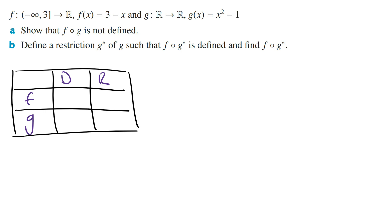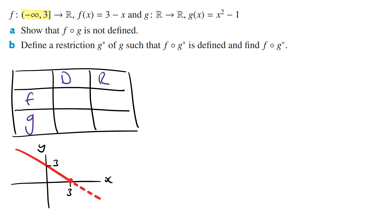f of x is a linear function. The domain of f is given as from minus infinity to 3. Doing a quick sketch of the function f for its given domain, we can see that the range of f of x is going to be from 0 to infinity. Writing this in the table, the domain of f is from minus infinity to 3 and the range of f is from 0 to infinity.